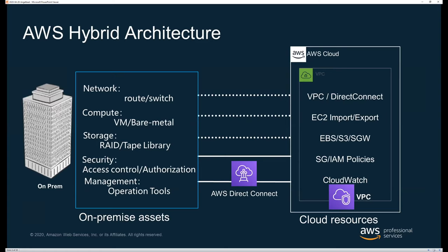From an application modernization standpoint, hybrid architectures also apply to databases. Many organizations have large on-premises database servers with multiple applications accessing them, making decoupling difficult. They might move the front end into the cloud and have the application reach back to on-premises databases while working out a more detailed plan for decoupling.